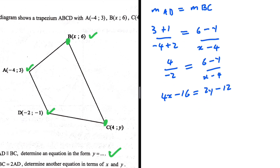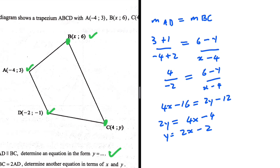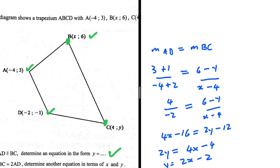Making y the subject of the formula: 2y = 4x − 16 + 12, which is 4x − 4. Dividing throughout by 2, we get y = 2x − 2. So we have an equation in the form y equals something, using the fact that the two lines are parallel and their gradients must be equal. That is question 3.1.